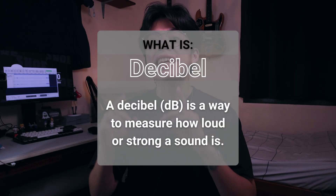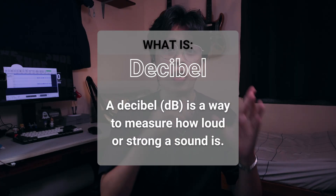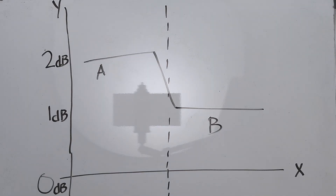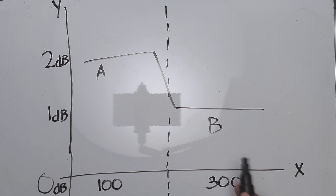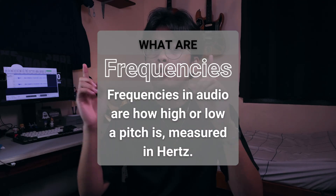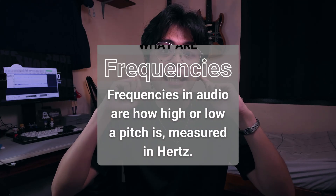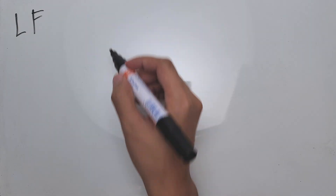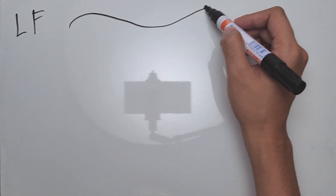Decibels, or dB, is the standard international unit for sound pressure levels or gain relative to a reference. For the horizontal line, let's add two labels: 100 under line A and 300 under line B. These are frequencies, represented by the SI unit Hertz or Hz. Frequencies in audio are what's referred to as the sound waves or pitch that travel through the air and get picked up and recorded. In our case, we're listening to recordings — the lower the frequency, the longer the wave and the deeper the pitch.